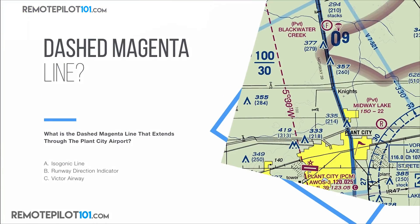Next question — this dashed magenta line thing. What is the dashed magenta line that extends through the Plant City Airport? Here's Plant City, and there's this weird dashed magenta line going right through it. Is it an isogonic line, the runway direction indicator, or a Victor airway?